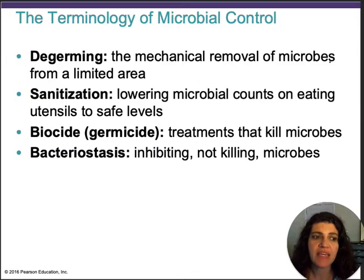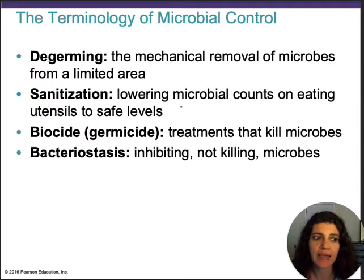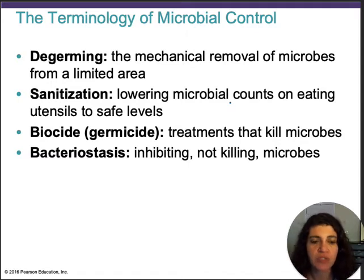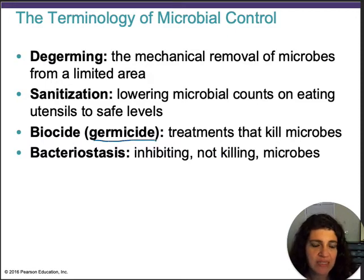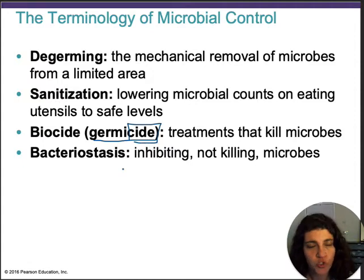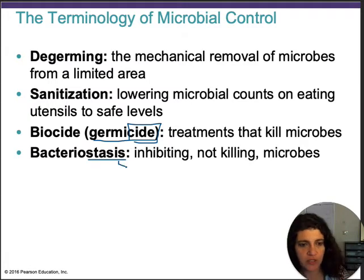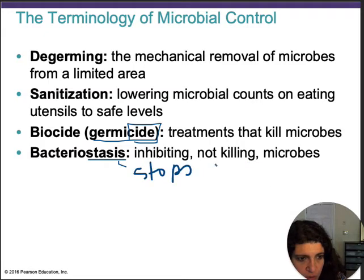Degermation is the mechanical removal of microbes from a limited area. Sanitation is usually applied to situations where you're trying to keep eating utensils safe and free from microbes. A biocide or germicide is an agent that kills microbes. Bacteriostasis — stasis means stopping growth — so this inhibits rather than kills microbes.